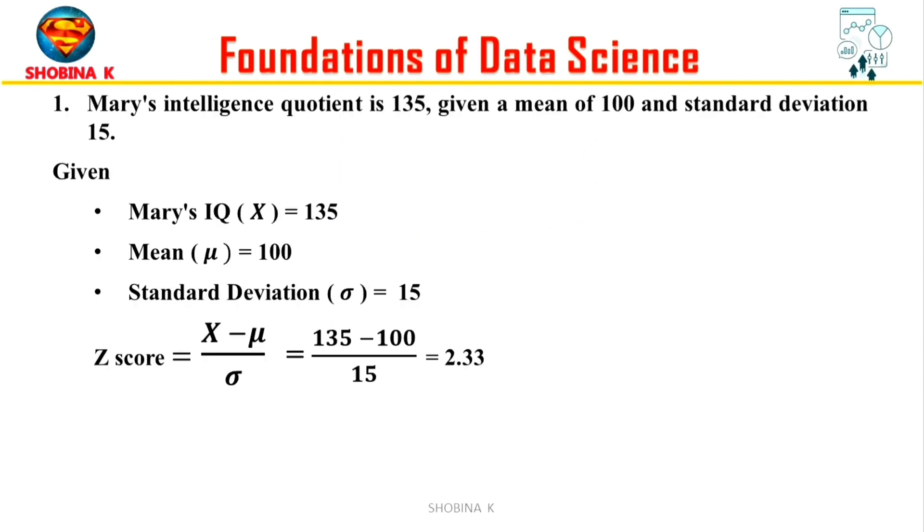First, let's consider Mary's intelligence quotient. Her IQ score is 135 and we know that the mean IQ is 100 with a standard deviation of 15. Now plugging the values into the formula, which simplifies to 2.33. This means Mary's IQ score is 2.33 standard deviations above the mean. So Mary's z-score for her intelligence quotient of 135 is approximately 2.33.